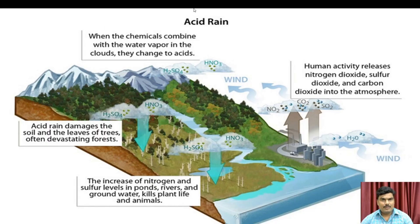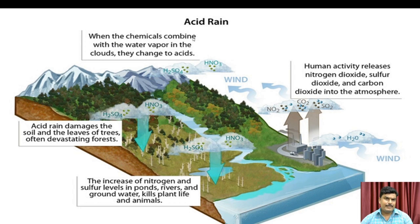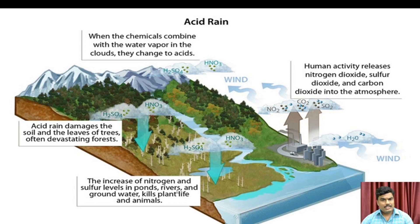This is another way to understand acid rain. Human activity releases nitrogen dioxide, sulfur dioxide, and carbon dioxide into the atmosphere. When these chemicals combine with water vapour in the clouds, they change to acid rain. The acid rain damages the soil and leaves of trees, often devastating forests. The increase of nitrogen and sulfur levels in ponds, rivers, and groundwater kills plant life and animals.